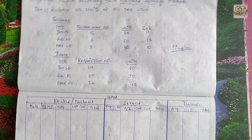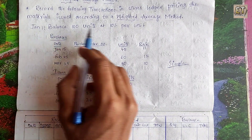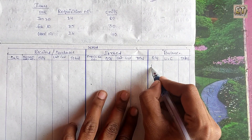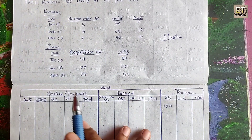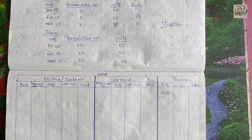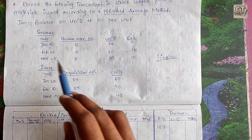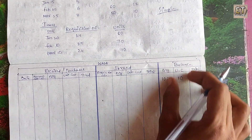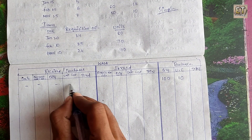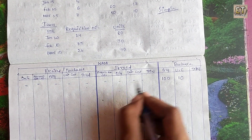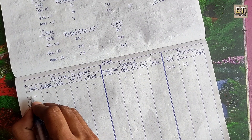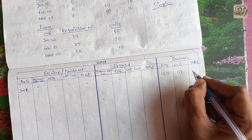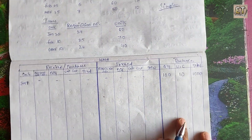Now let's get into the question. Let's look at what we are doing first. January 1st — opening balance. We have a balance of 100 units. The quantity is 100 units. The unit cost is 10 rupees. So the opening balance: 100 units × 10 rupees = 1,000 rupees. Date: January 1.